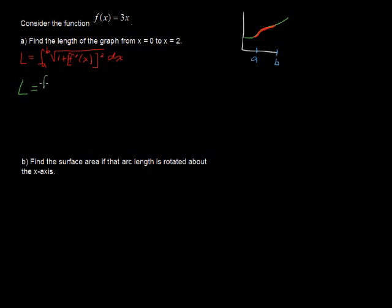So the length equals the integral from 0 to 2 of the square root of 1 plus 3 quantity squared dx. And where does this 3 come from? Well, if f(x) is 3x, then f'(x) equals just 3, and that's what's going in right here, and we are squaring that.